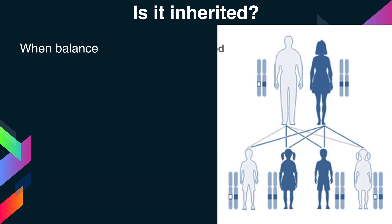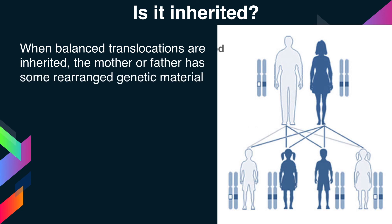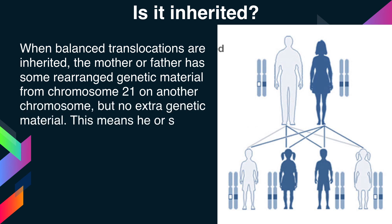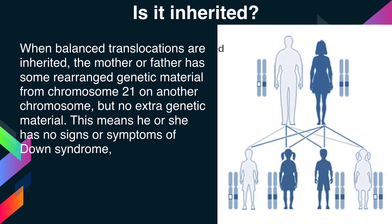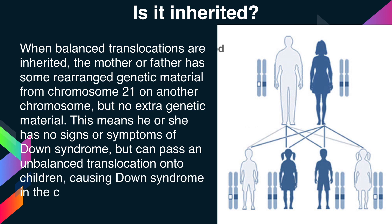When balanced translocations are inherited, the mother or father has some rearranged genetic material from chromosome 21 on another chromosome but no extra genetic material. This means he or she has no signs or symptoms of Down syndrome, but can pass an unbalanced translocation onto children, causing Down syndrome in the children.